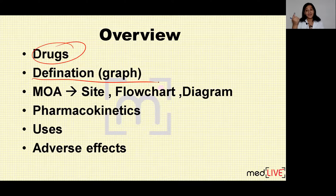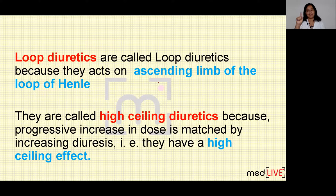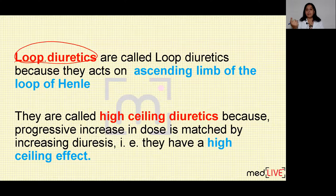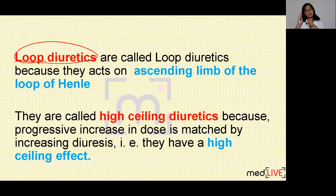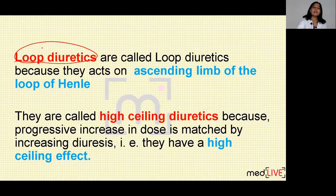Now why loop diuretics are known as loop diuretics? The reason is very simple — because they act on the loop of Henle in the nephron. The nephron has various parts: glomerulus, PCT, loop of Henle, DCT and collecting tubules. They act specifically on the ascending limb of loop of Henle. That is their site of action, and that is why they are known as loop diuretics.